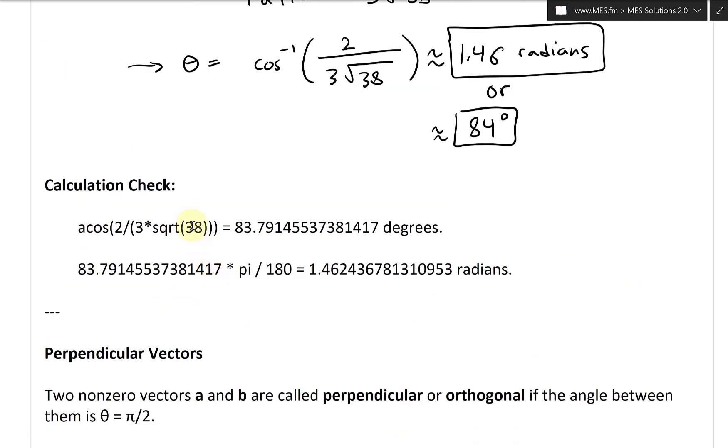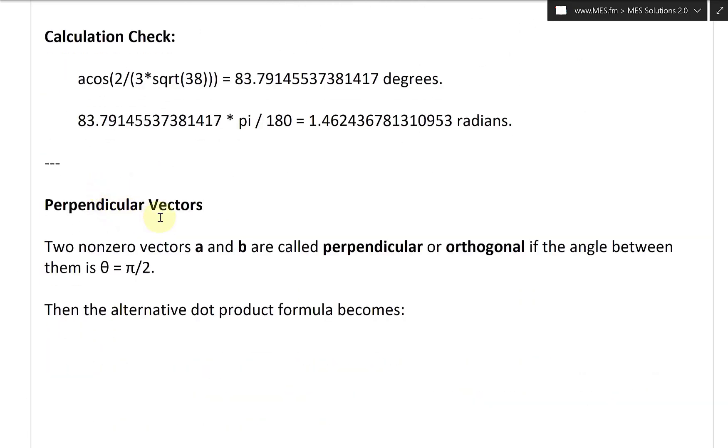All right, so now let's continue further and look at perpendicular vectors. I'll put this in the topics to cover right now. Two non-zero vectors a and b are perpendicular or orthogonal, basically the 90 degree setup, if the angle between them is theta equals pi over two radians or 90 degrees.